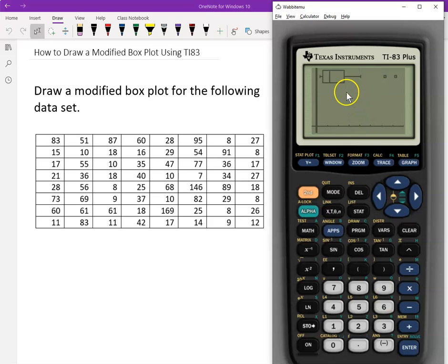See, this is the modified box plot. It's very good. All right. We see two outliers there.